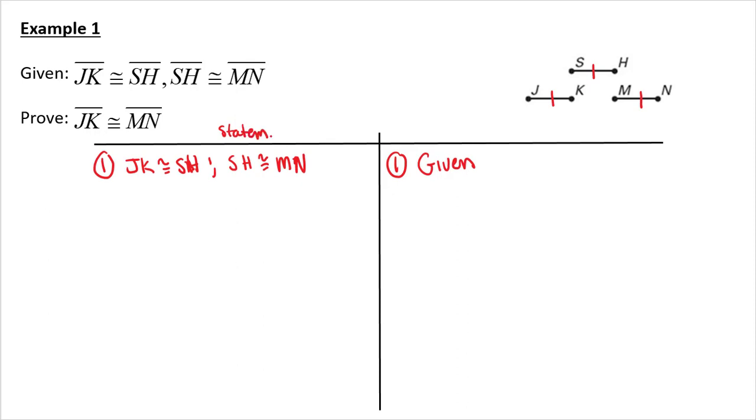And reasons over here. Step two. If JK is congruent to SH and SH is congruent to MN, I can say that JK is congruent to MN by our transitive property. So very easy proof. One step, two steps technically.